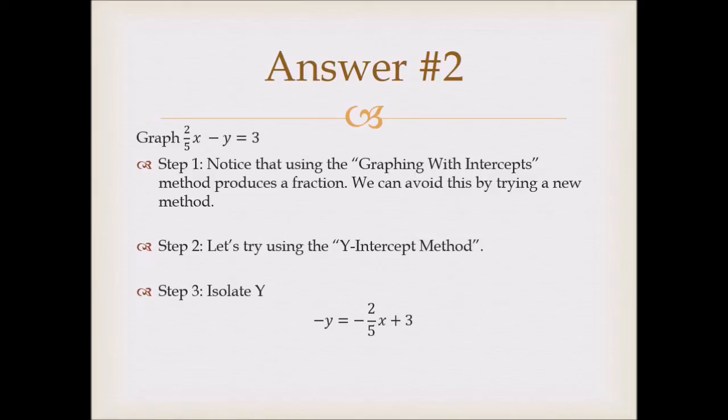Now at this point, we don't want negative y, we want it to be positive y. So let's divide by negative 1 to get rid of it on y. That way we get y equals 2 fifths x minus 3. And then all you have to do is graph that using the y-intercept method. And you can rewind to see how to do that.